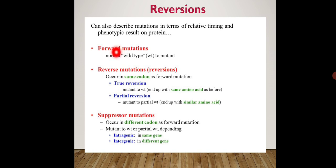There are different terms here. First is forward mutation — where the normal wild type gene is converted into a mutant type by using a mutagen. Second is reverse mutation, also called reversion — where the mutant is converted back into the normal or wild type. Hence it is termed reversion.